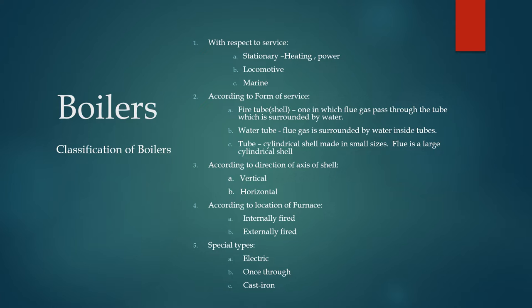The next type is the special type — electric boiler, once-through boiler, or cast iron boiler. These are the classifications of boilers.